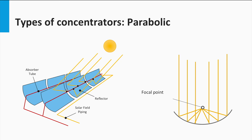Different types of concentrators produce different peak temperatures, and correspondingly varying thermodynamic efficiencies due to the different ways of tracking the sun and focusing light. Innovations in this field are leading to more and more energy-efficient and cost-effective systems.